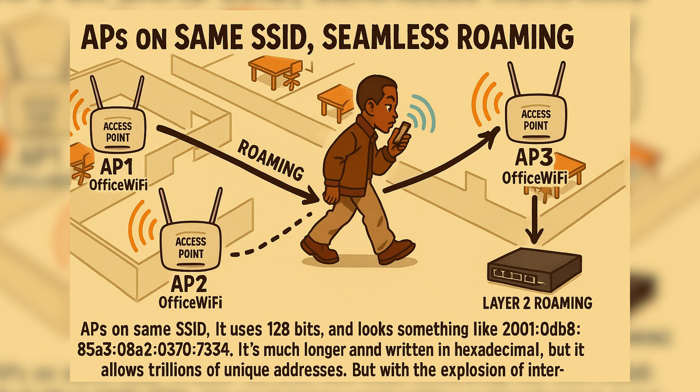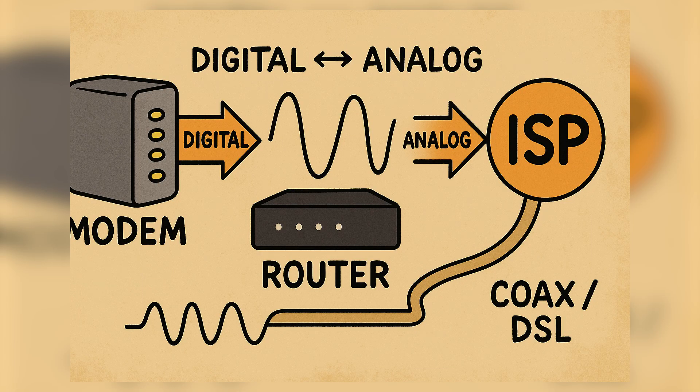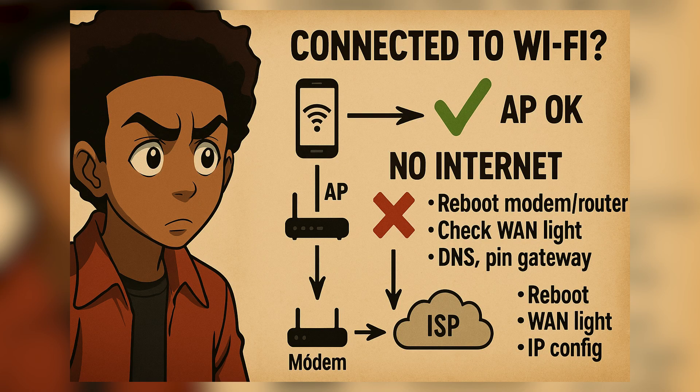An access point extends wireless coverage, allowing multiple users to connect to the same network wirelessly. Think about walking through a large office building — your device automatically connects to different access points as you move, but you stay on the same network. A modem converts digital data from your network into analog signals for transmission over phone or cable lines, and vice versa. Without a modem, your router wouldn't be able to talk to your ISP. For example, if a user says they can connect to Wi-Fi but can't reach any website, the access point is working, but the issue is likely the router or modem handling external communication.